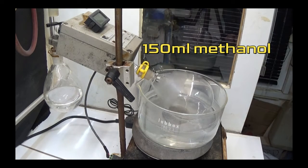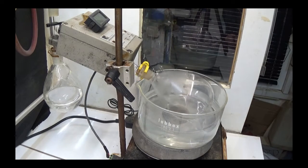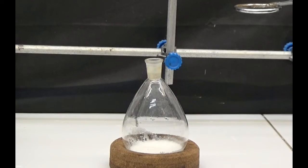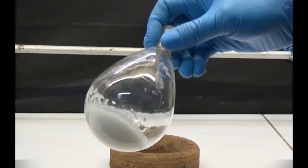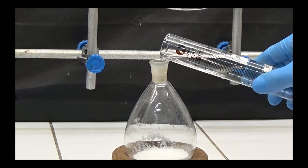We evaporate the methanol using vacuum distillation in a water bath to recover it. After all the methanol has evaporated, we allow it to rest so that the acid crystallizes.